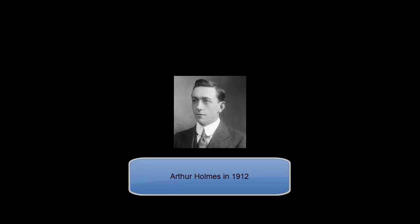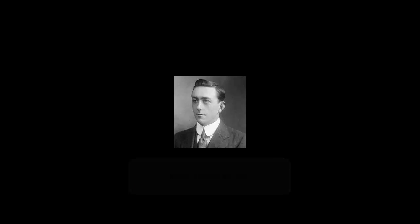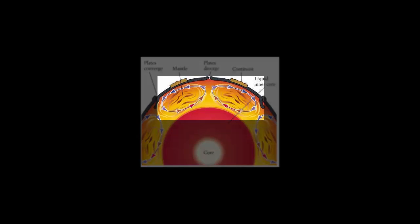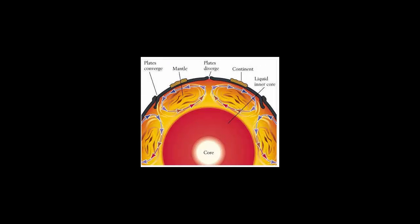In 1929, another scientist named Arthur Holmes expanded on Wegener's theory. He proposed that there are thermal currents in the Earth's mantle where hot materials rise to the top of the mantle, cool, and sink back to the lower areas. These cyclical currents, Holmes suggested, were enough to move continents. His theory was largely ignored.